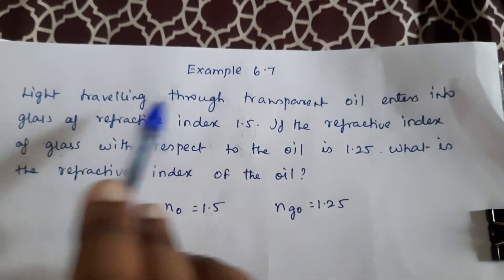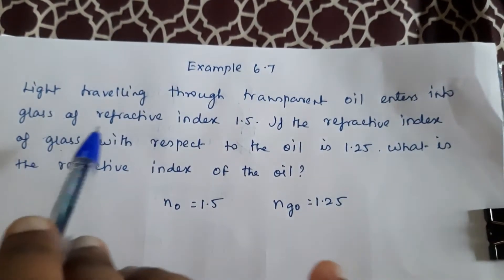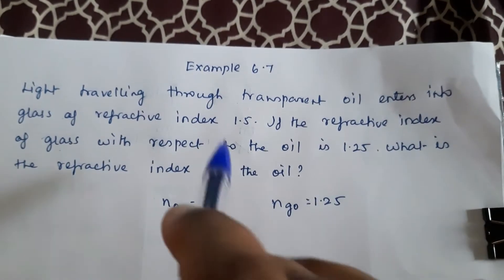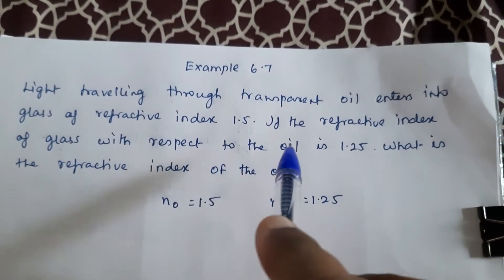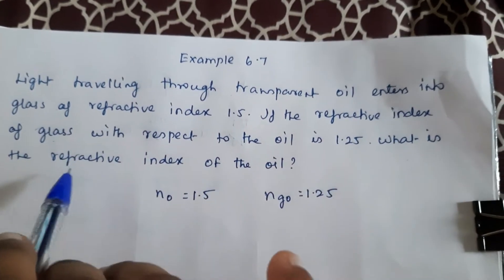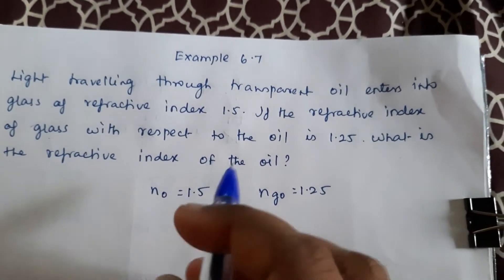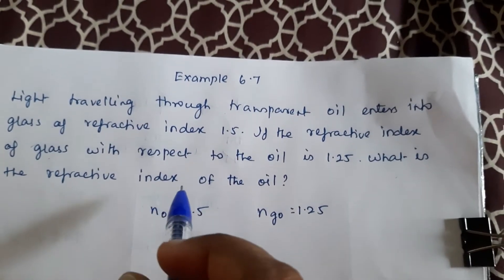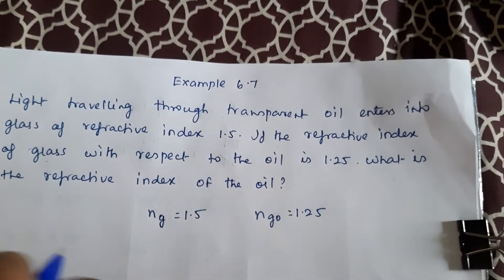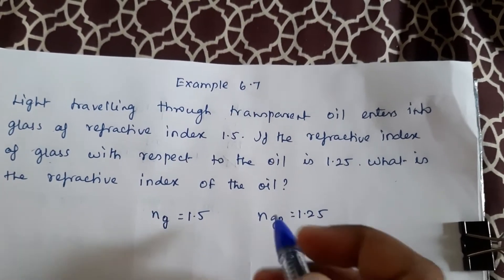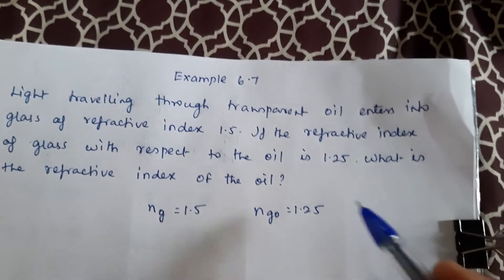Example 6.7: Light traveling through transparent oil enters into glass of refractive index 1.5. If the refractive index of the glass with respect to the oil is 1.25, what is the refractive index of the oil? The refractive index of the glass is given as 1.5 and the refractive index of the glass with respect to oil is given as 1.25.